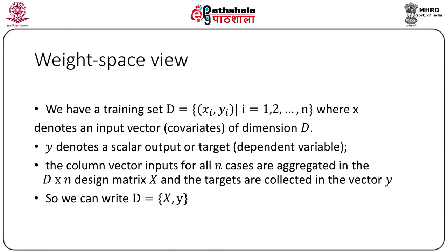We have a training dataset called script D, which is the vector (x_i, y_i) for i from 1 to n, where x denotes an input vector or covariates of dimension D, and y denotes a scalar output or target, the dependent variable. The column vector inputs for all n cases are aggregated in the D×n design matrix X, and the targets are collected in the vector y, so we write script D as (X, y).